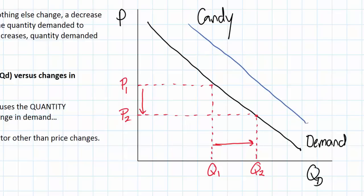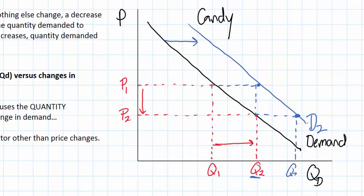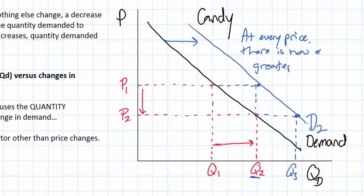Let's draw a new blue demand curve — I'll call this one D2, demand 2. As we can see, D2 is to the right of my black D1 curve. What does that mean? It means that at every price, including P1 and P2, a greater quantity of candy is now demanded by my students. For example, at P1 there is now a quantity of Q2 demanded, and at P2 — the lower price — there is now a greater quantity, we'll call this Q3, demanded. So at every price there is now a greater quantity demanded.